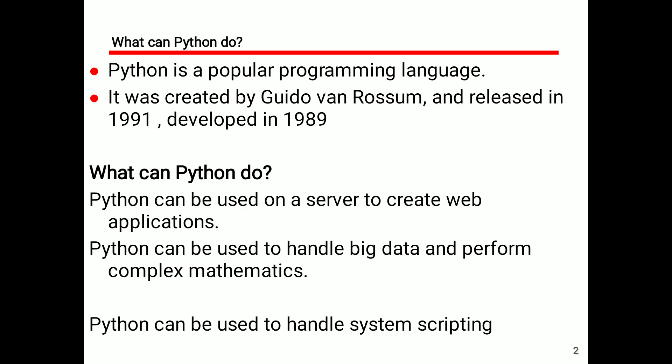First of all, what can Python do? Python is a popular programming language. There are so many programming languages — first programming languages like Ada, then object-oriented languages, procedure languages, high-level languages, and so on. Python is a programming language created by Guido Van Rossum, released in 1991 and developed in 1989.